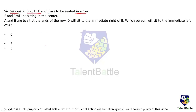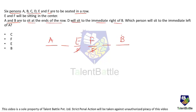Sample Q3 — Seating Arrangement: Six persons A, B, C, D, E, F are seated in a row. E and F sit in the center (positions 3 and 4). A and B sit at the ends. D sits to the immediate right of B, so B must be at one end and D is adjacent — placing B at position 1 and D at position 2, with A at position 6. E and F occupy positions 3 and 4. The only remaining person, C, sits to the immediate left of A. Answer: C.